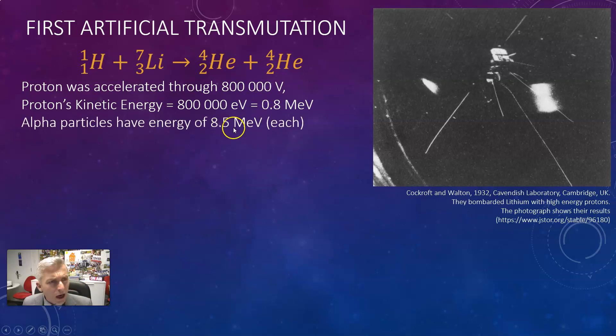Now the alpha particles can measure their energy by how far they travel in this gas and they were measured to have 8.5 MeV each and there were two of them so it's clear that quite a lot of kinetic energy gets created.